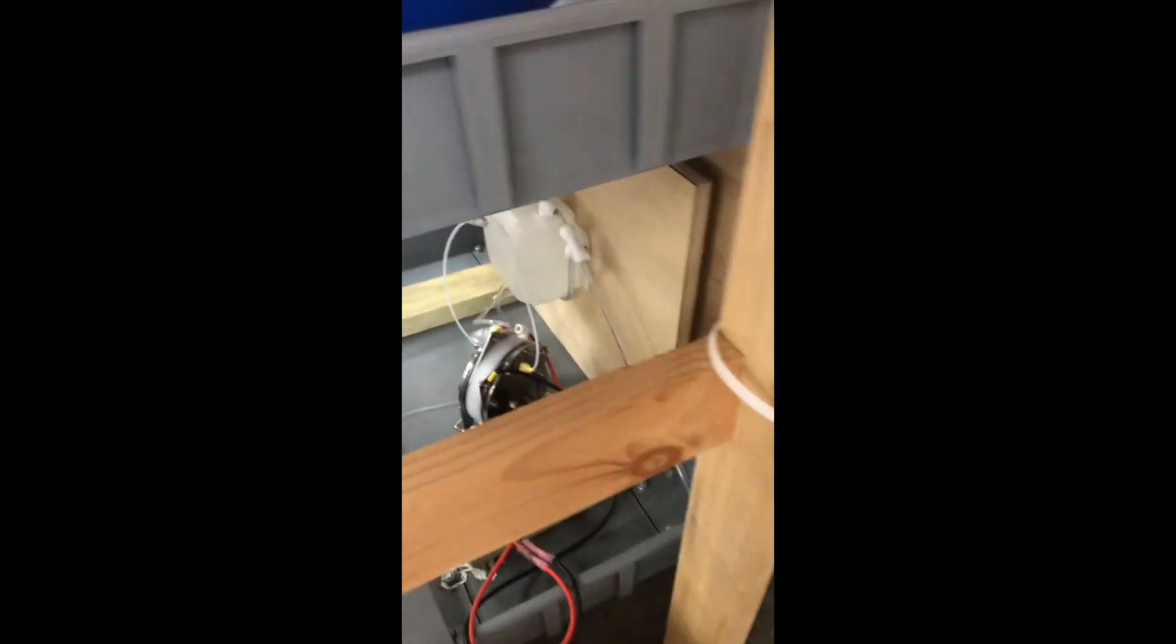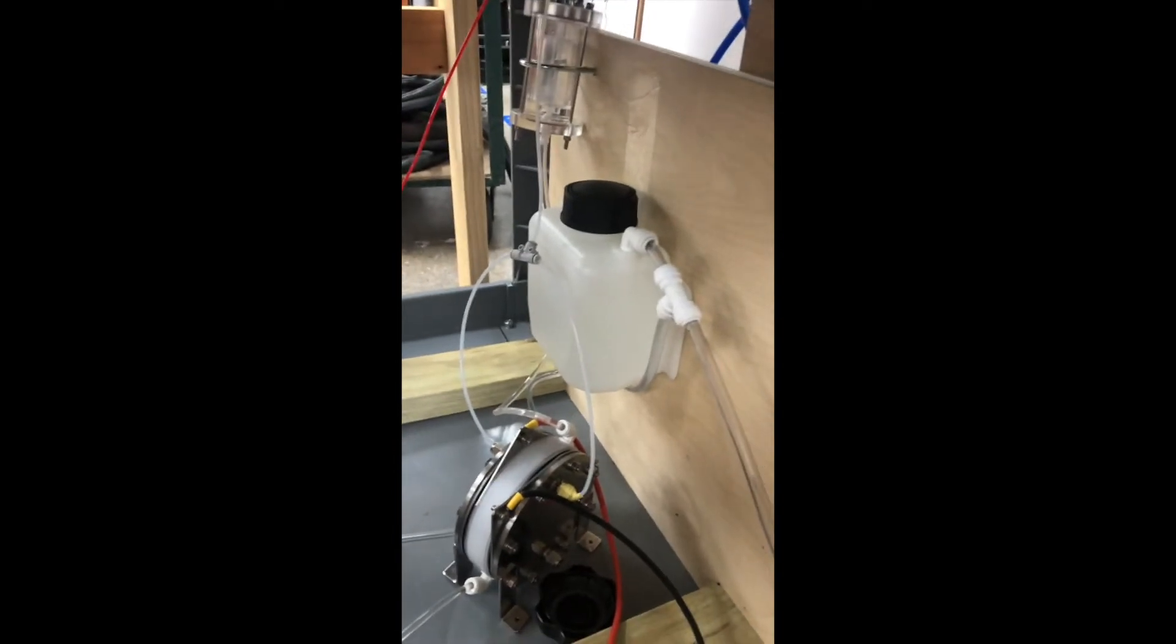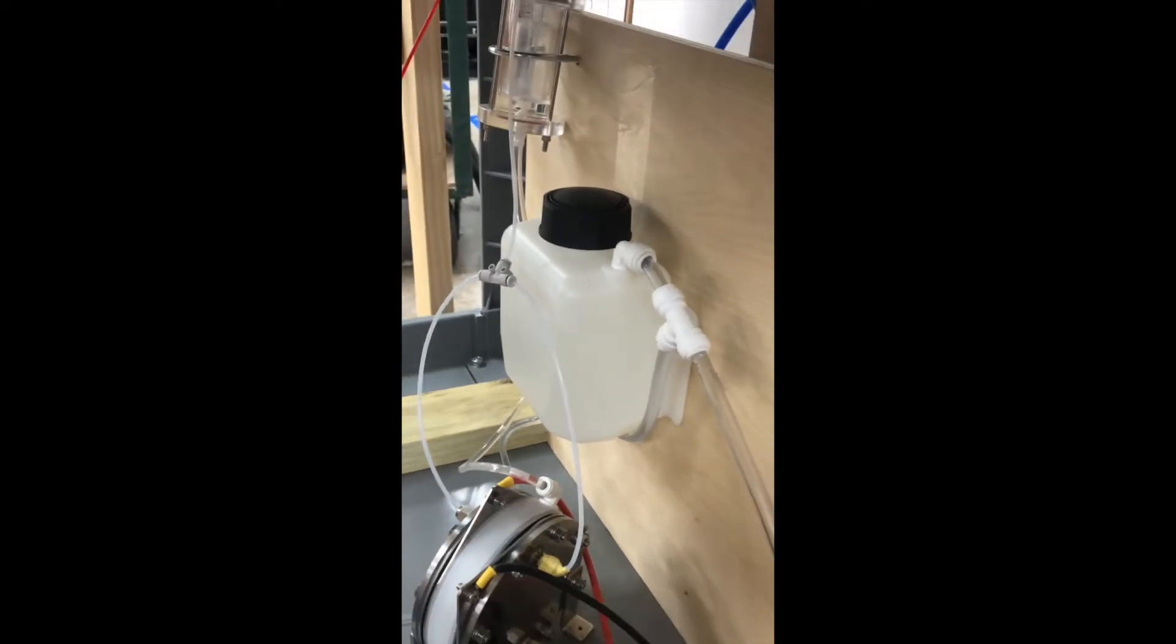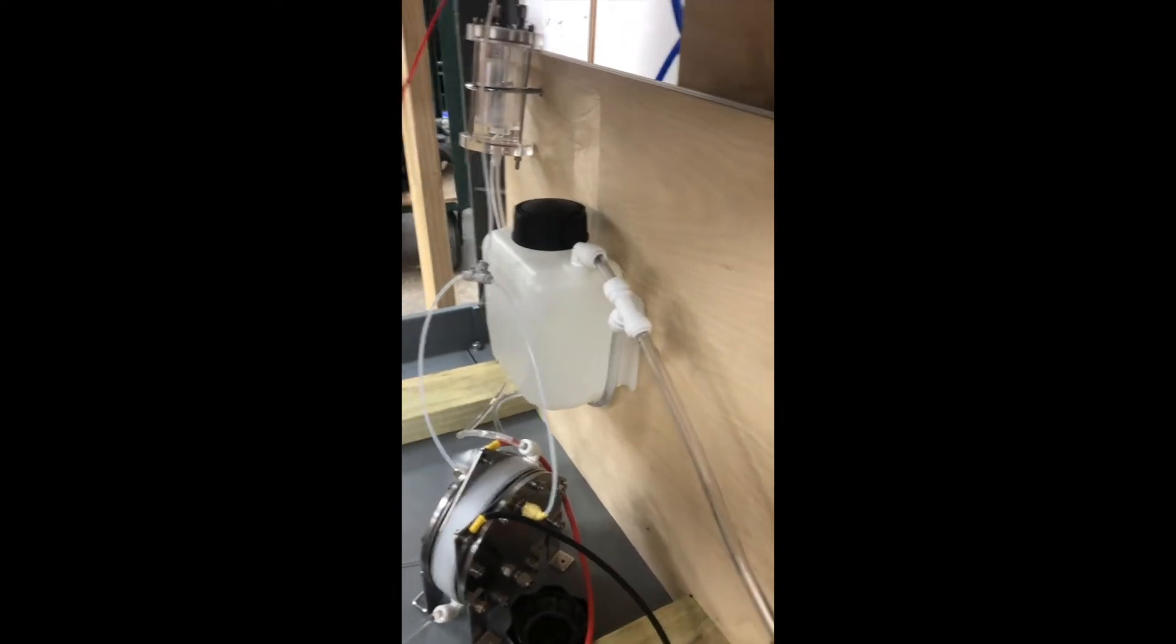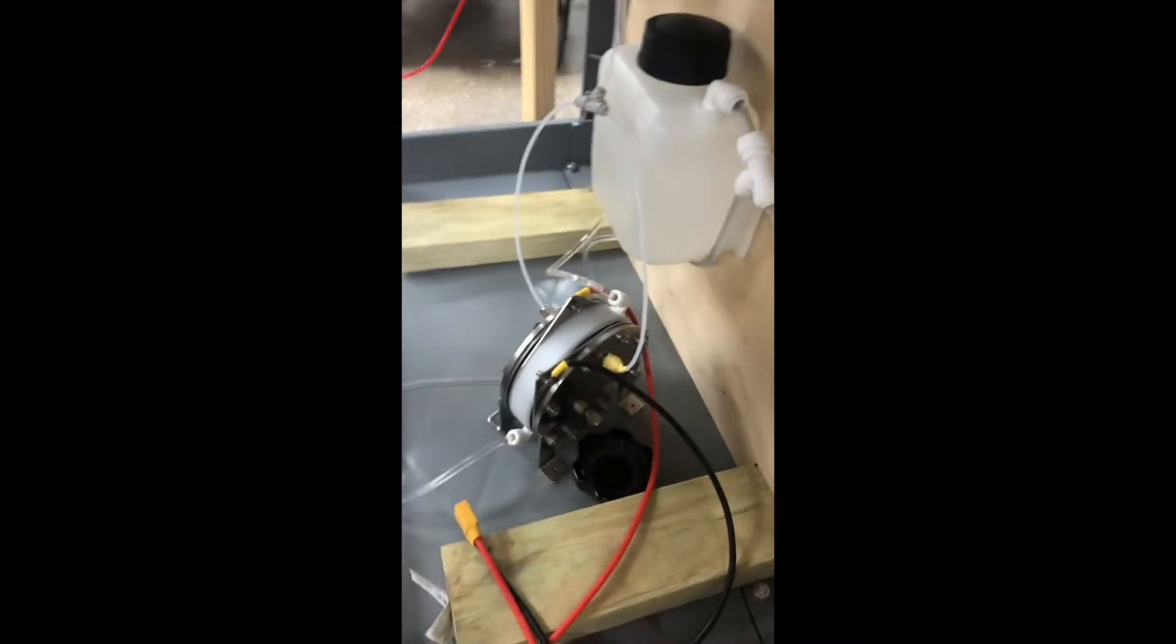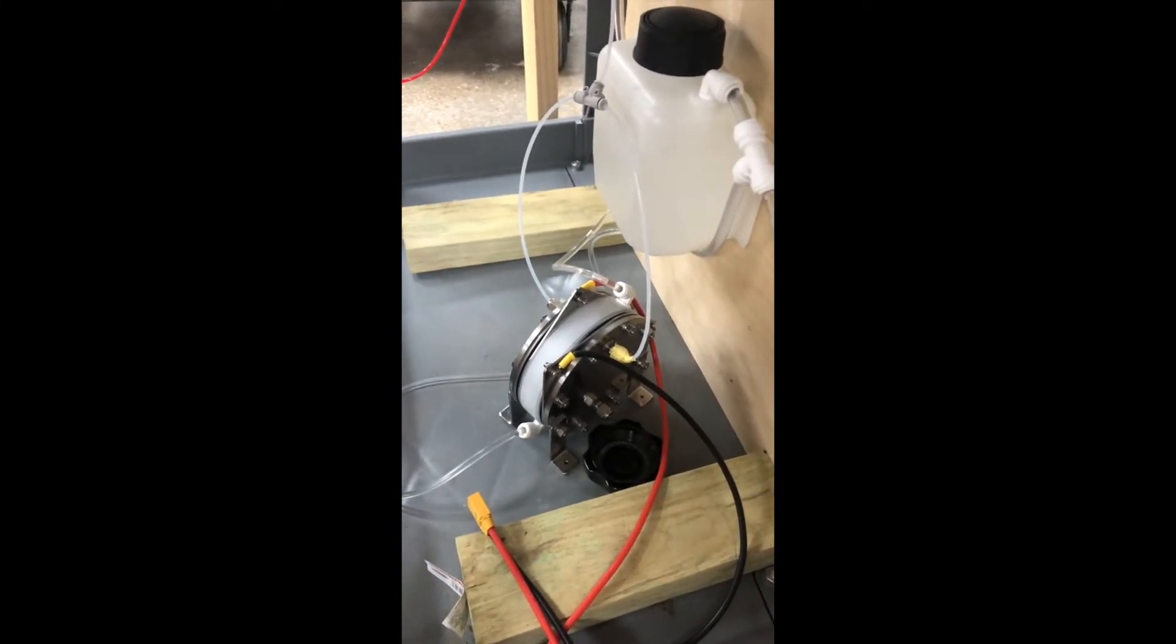Eventually the water gets to this one right here. This is the secondary reservoir - you can see it's got some water in it right now. This is the place where the water circulates through the PEM electrolyzer, which separates the water into hydrogen and oxygen.